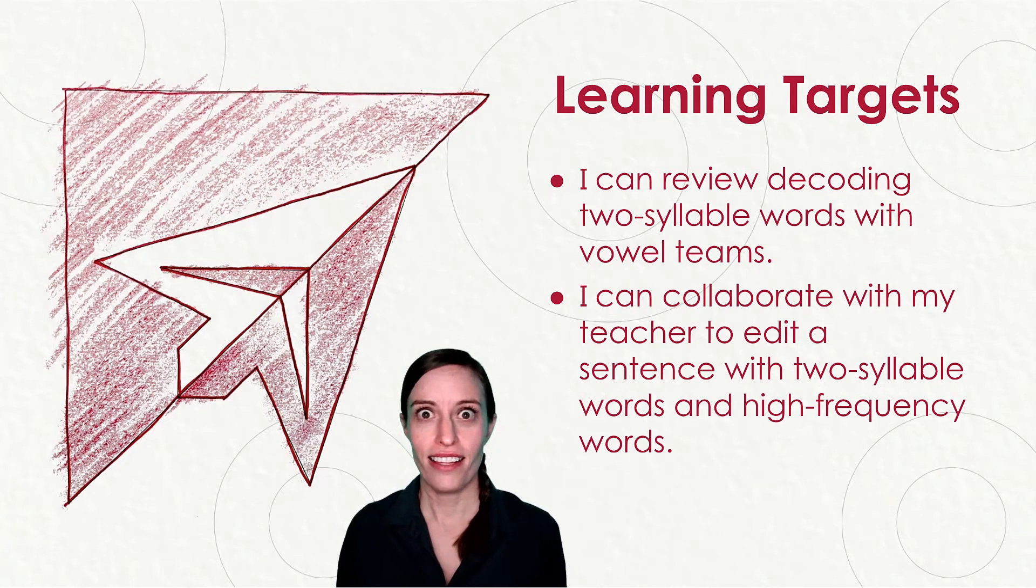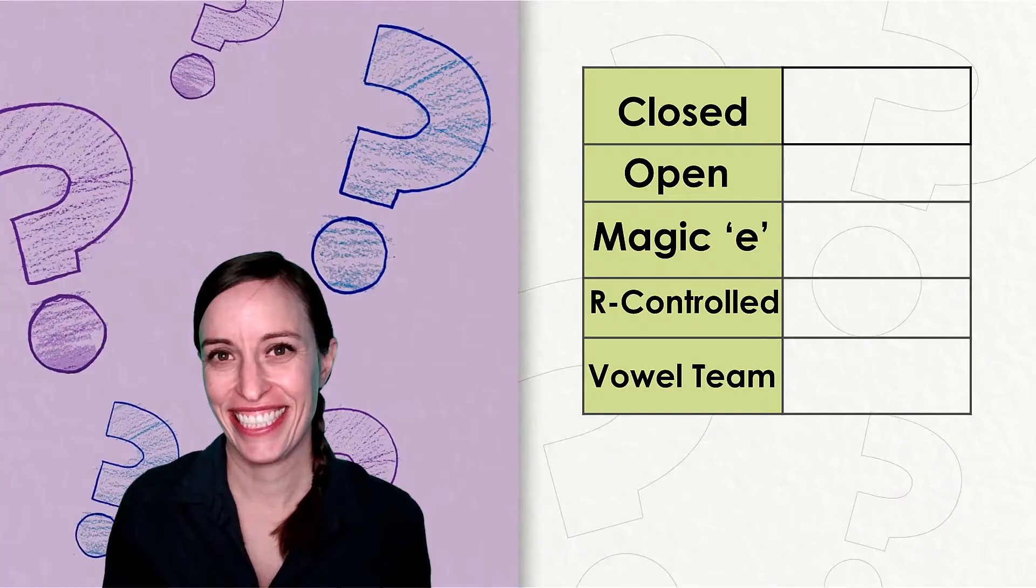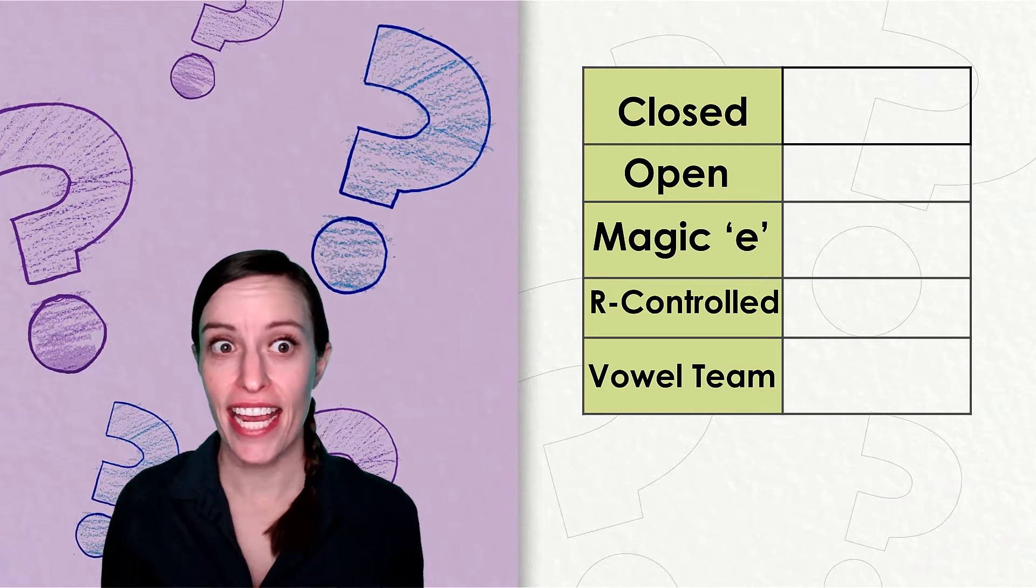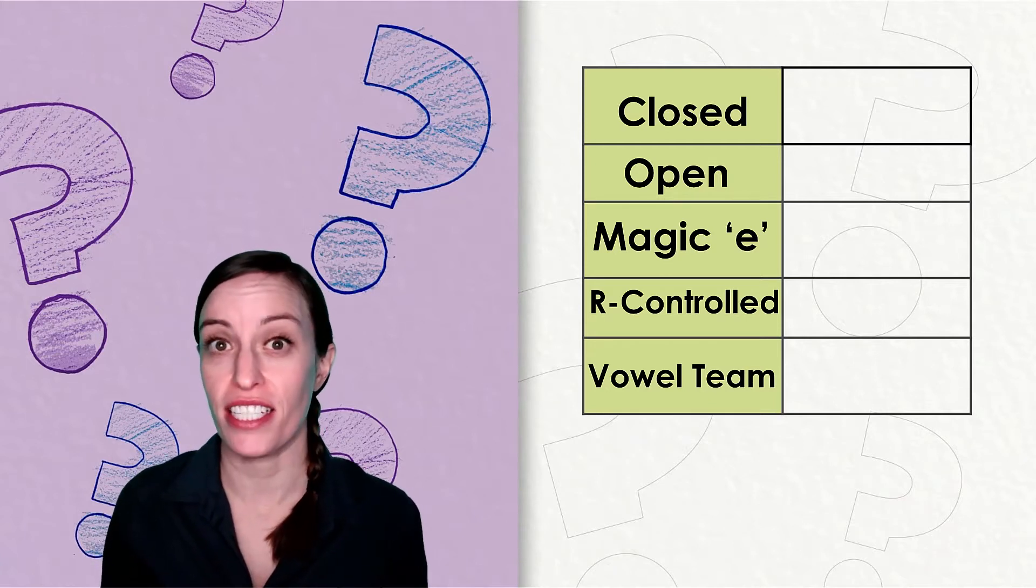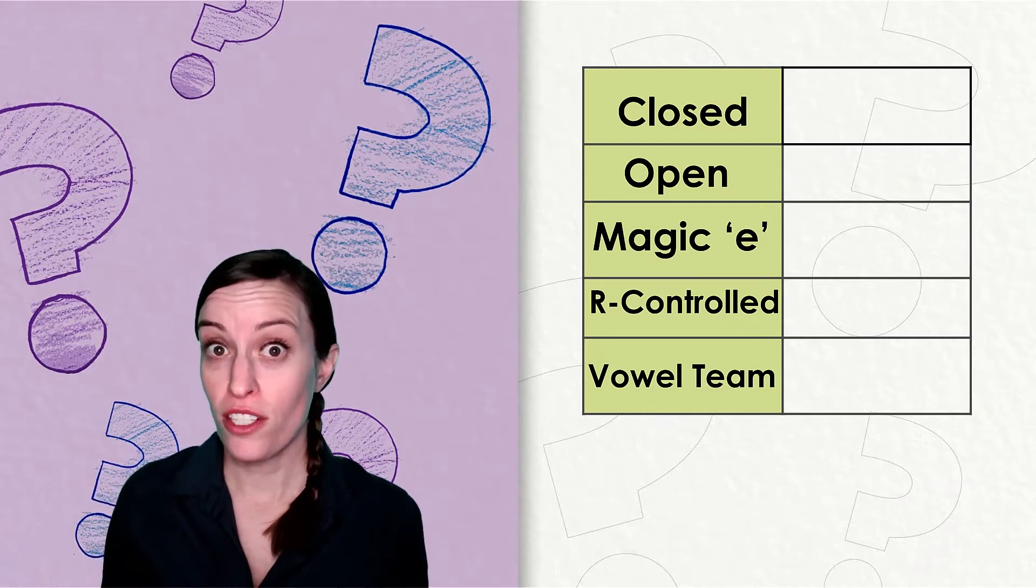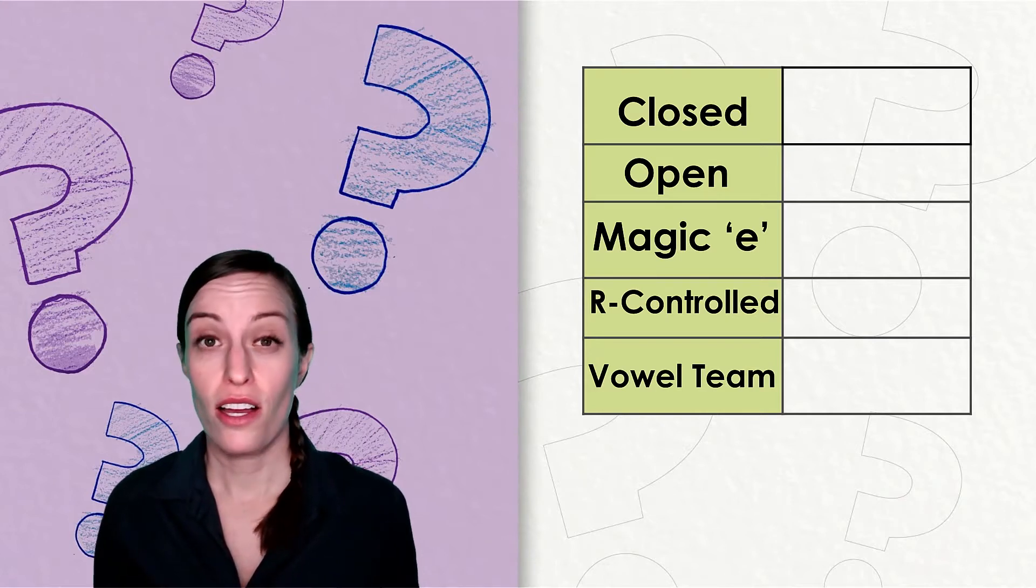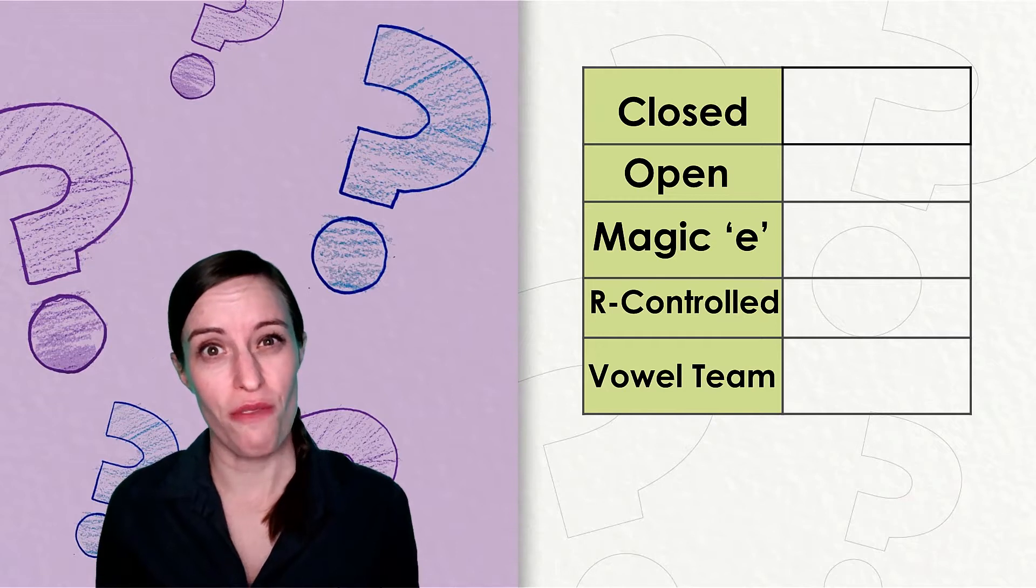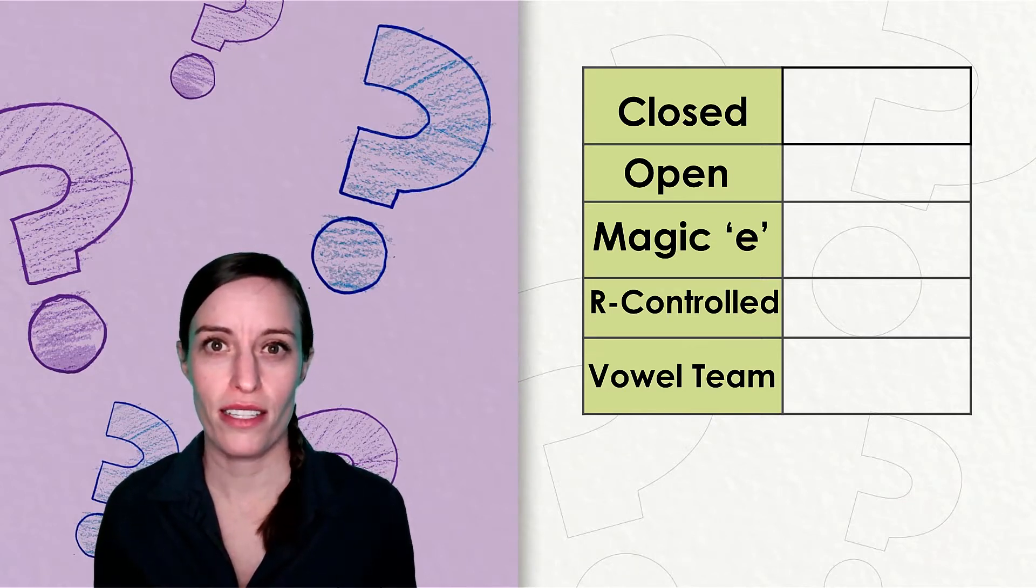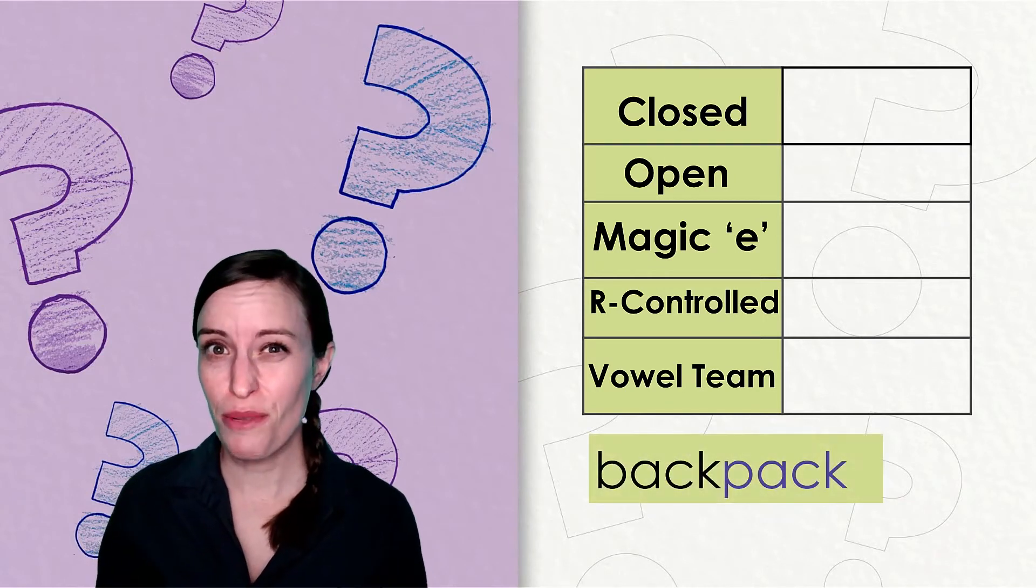Let's get going. Question and answer. Okay, today I will ask you some questions to review all of the syllable types that we've been learning. Our choices are closed syllables, open syllables, magic e syllables, syllables with r-controlled vowels, and vowel team syllables. Do your best to shout out the answer.